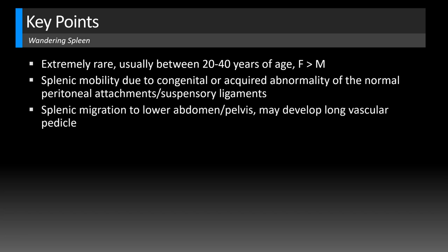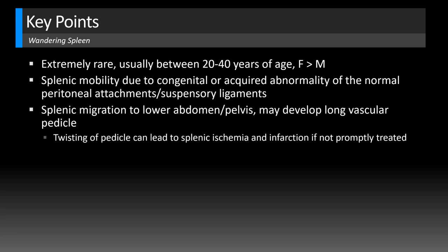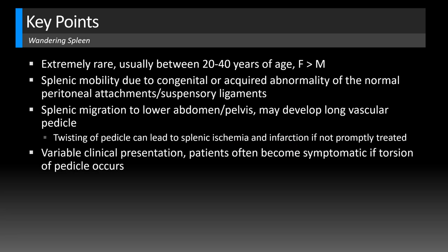Once the spleen is freed of the shackles binding it to the left upper quadrant, it explores the abdomen. It can migrate to anywhere in the lower abdomen and pelvis, creating this long vascular pedicle. If that pedicle twists, that's when you might get splenic ischemia and infarction if it's not properly treated.